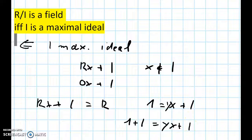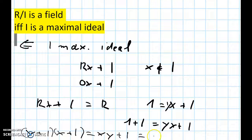And this means that this element x plus I has an inverse, which is y plus I, right? y plus I times x plus I is x times y plus I, which is the same, as we've just shown, as 1 plus I.